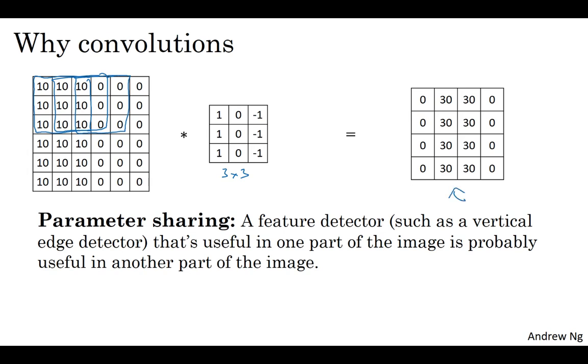And so, each of these feature detectors, each of these outputs, can use the same parameters in lots of different positions in your input image, in order to detect, say, a vertical edge or some other feature.